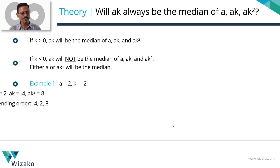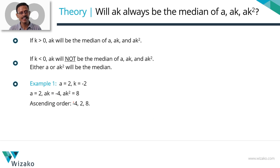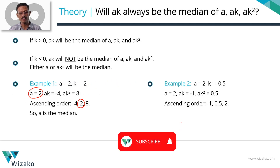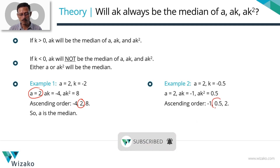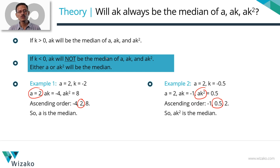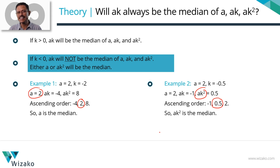In recap: if K is negative, AK will not be the median — it's going to be either A or AK². Remember this. So if somewhere in a data-sufficiency question they mention A, AK, AK², and you think AK is going to be the median, check once more. Verify whether K is positive — whether that's stated in the question stem or in the statements. If it's not stated anywhere, you cannot assume K is positive, so AK need not be the median.